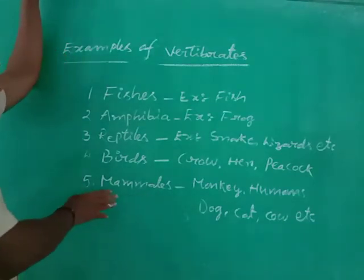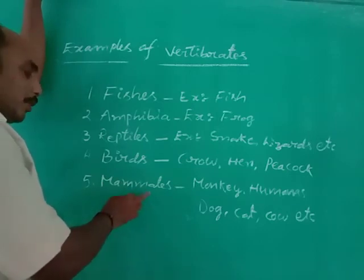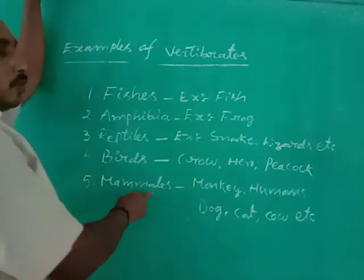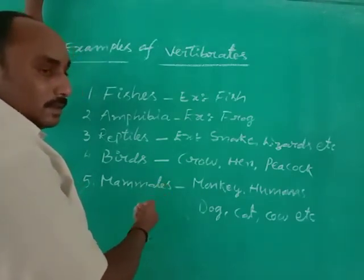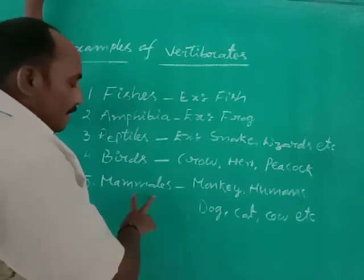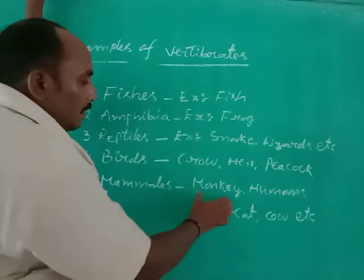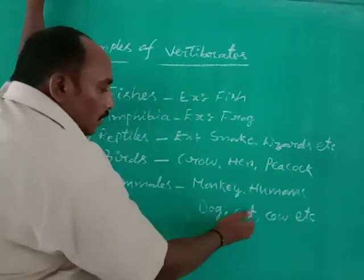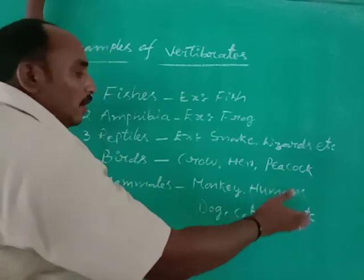The last group is mammals. All these organisms produce milk and give birth to young ones. They feed their babies with their milk. Examples of mammals are monkey, human beings, dog, cat, cow, buffalo, etc.